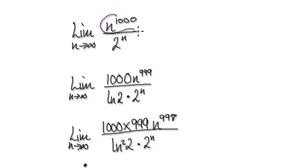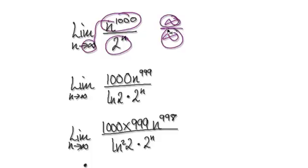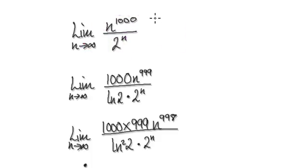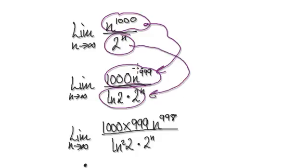We've done this in the past. As n tends to infinity, the numerator will head towards infinity and the denominator will also head towards infinity. So you've got infinity over infinity, which means you can apply L'Hôpital's rule. Applying L'Hôpital's rule, you differentiate the numerator — that gives you this — then differentiate the denominator, which gives you this.